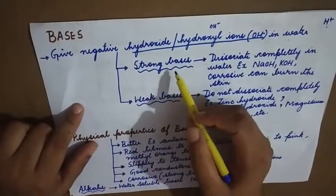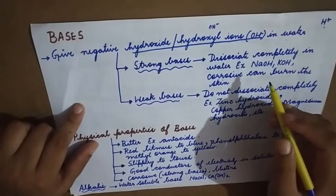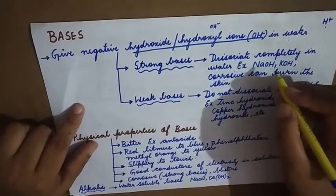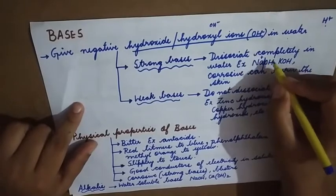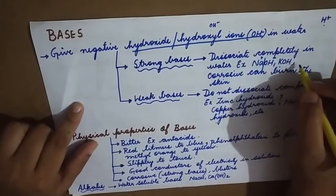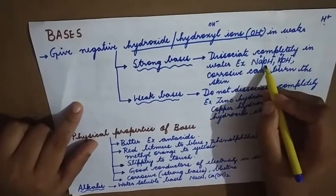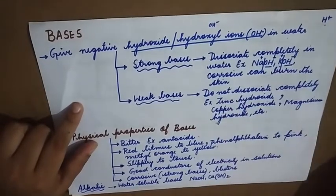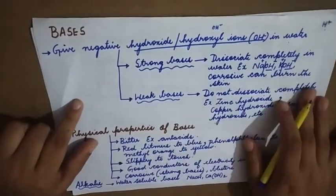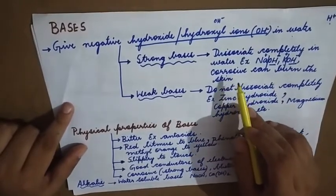Strong bases are those that dissociate completely in water — that means they separate totally in water. For example, NaOH breaks up into Na⁺ and OH⁻, and KOH (potassium hydroxide) breaks up into K⁺ and OH⁻. In both cases the OH⁻ ion is released. Strong bases are corrosive and can burn or damage the skin.